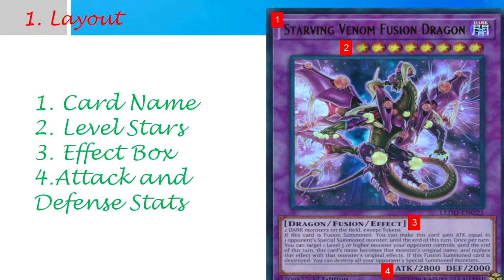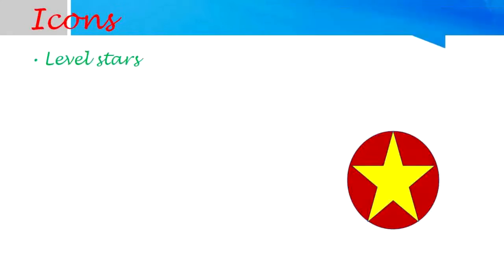The Fusion card layout includes: 1. Card Name, 2. Level Stars, 3. Effect Box, and 4. Attack and Defense Stats. Icons include Level Stars.